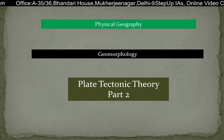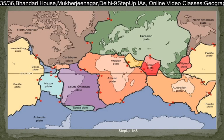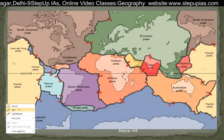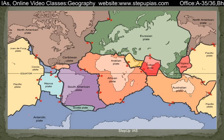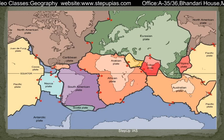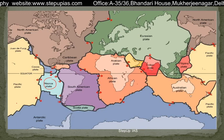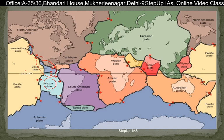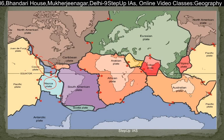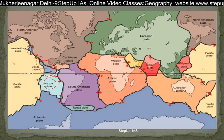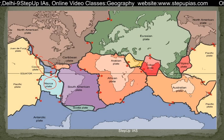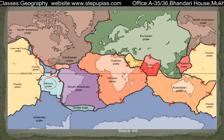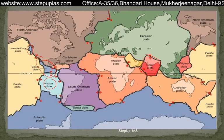In our earlier classes we saw what types of plates are found on Earth's crust. In this image you can see all the plates we discussed previously — the Pacific plate, Juan de Fuca plate, Cocos plate, North American plate, Caribbean plate, Eurasian plate, Arabian plate, and Indian plate.